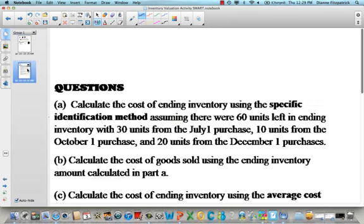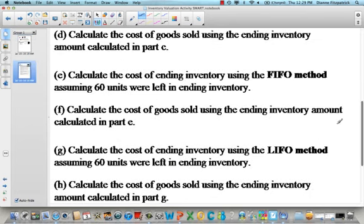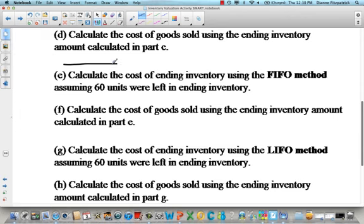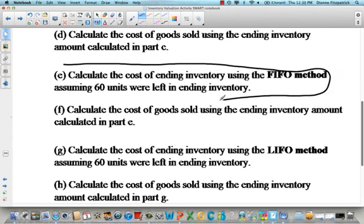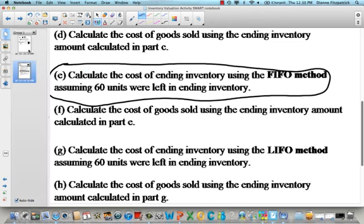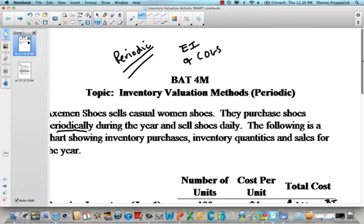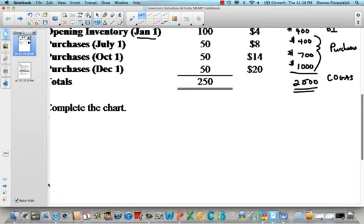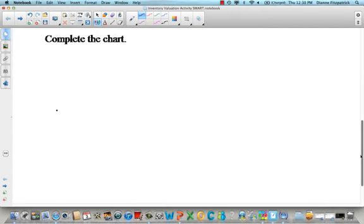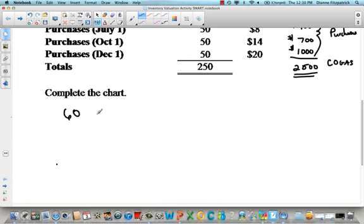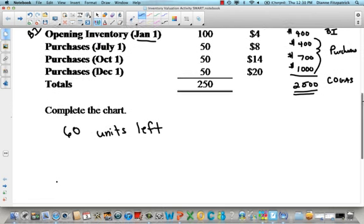What I want to do next is, using that chart, here are some questions. As you know, we're looking at FIFO. I want to look at this question we have here: Calculate the cost of ending inventory using the FIFO method, assuming 60 units were left in inventory. So we have this chart that we've built here and we're going to assume that we have 60 units left in inventory. What we need to do is calculate the cost of goods sold and our ending inventory. So let's start with calculating our cost of goods sold.